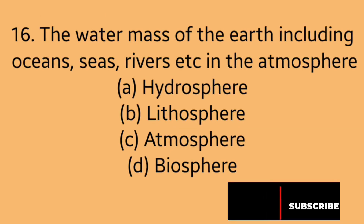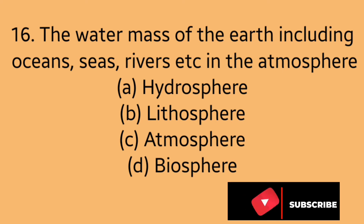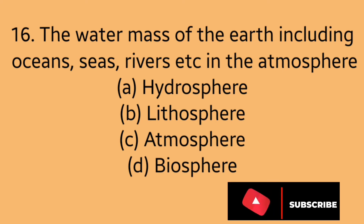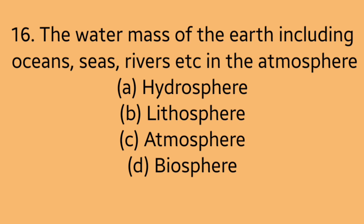Question 16: The water mass of the earth including oceans, seas, rivers, etc. is called? Option A: Hydrosphere. Option B: Lithosphere. Option C: Atmosphere. Option D: Biosphere. Answer is Option A, Hydrosphere.